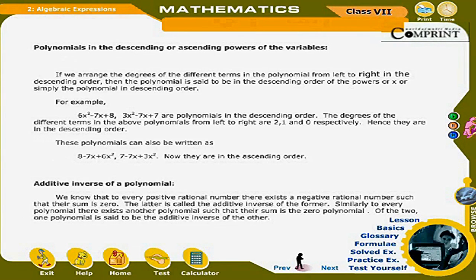Polynomials in descending or ascending powers of the variables: If we arrange the degrees of the different terms from left to right in descending order, the polynomial is said to be in descending order. For example: 6x² − 7x + 8 and 3x² − 7x + 7 are polynomials in descending order, with degrees 2, 1, and 0 from left to right. These can also be written as 8 − 7x + 6x² and 7 − 7x + 3x², which are in ascending order.